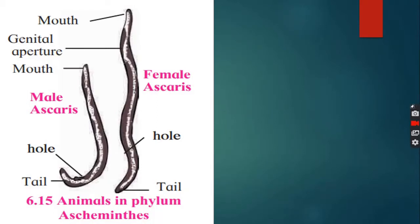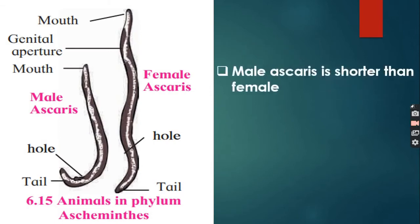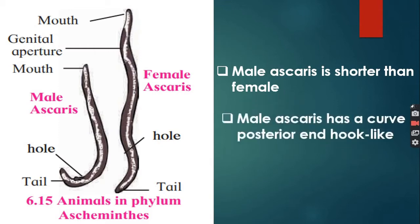If we look at male and female Ascaris separately, they have a mouth, genital aperture, and tail. Looking at male versus female Ascaris, the male Ascaris is shorter than the female Ascaris in length. The male Ascaris has a curved posterior end that looks hook-like when we look at the tail side — it is a curved type of structure.